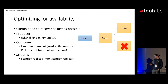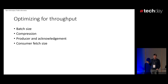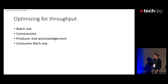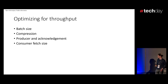For throughput, you want to send as many messages as possible in the unit of time. You want to increase the batch size so as many messages go in one go, and you want to use compression. On the consumer side, the same thing: you want to fetch as many messages as possible in one go, to have the least chatter over the network, because that's the most expensive part.